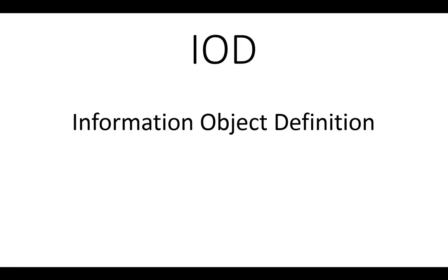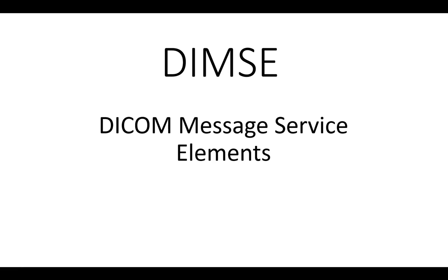Information Object Definitions — focus on the word 'object.' What is an object? Merriam-Webster defines an object as something material that can be perceived by the senses — a thing you can touch and see that is not alive. These are Information Object Definitions, or IODs.